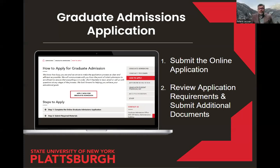A really important part of the application process is that there needs to be a faculty member here who is able and willing to take you on as their student, whether in the internship or research thesis track. The best thing you can do is email faculty members you think you might be interested in working with — even before starting the formal application — to discuss if they have opportunities in their lab, if they'd be willing to help you find an internship, whatever the case may be. It's a really important part of the process.